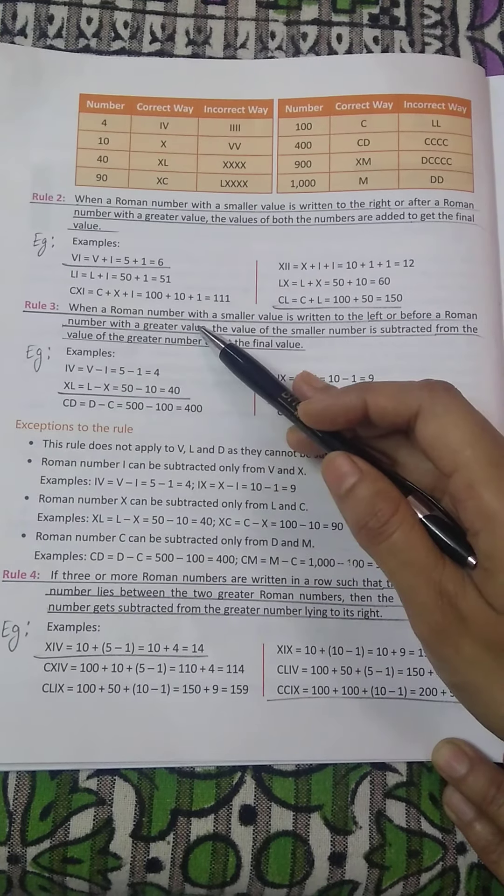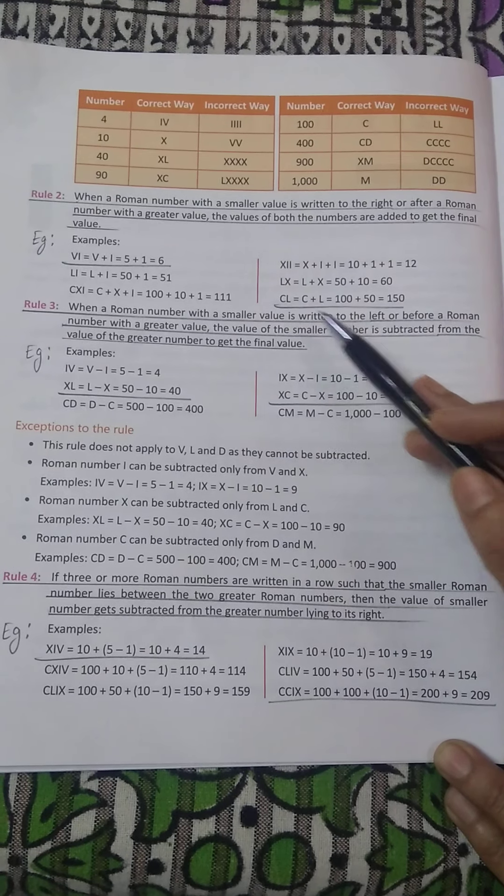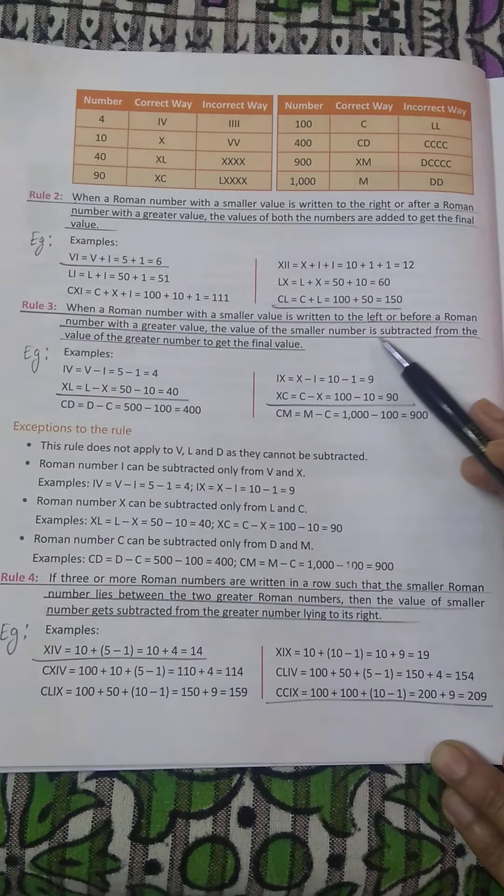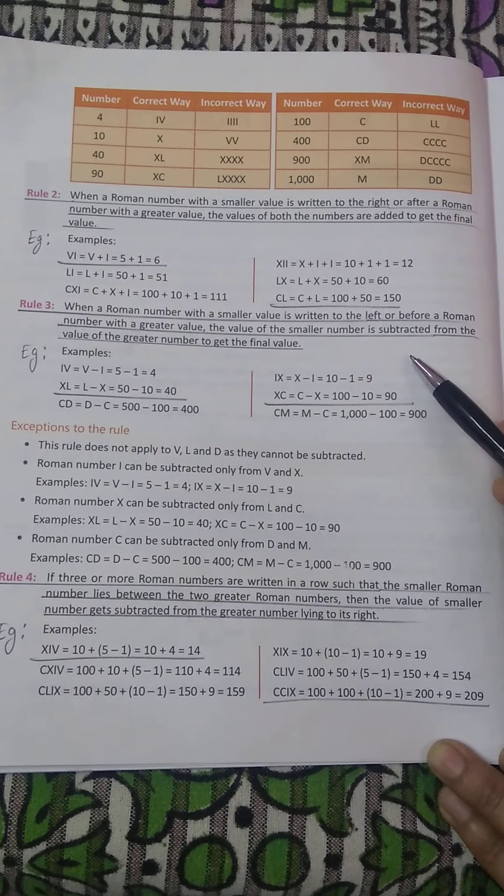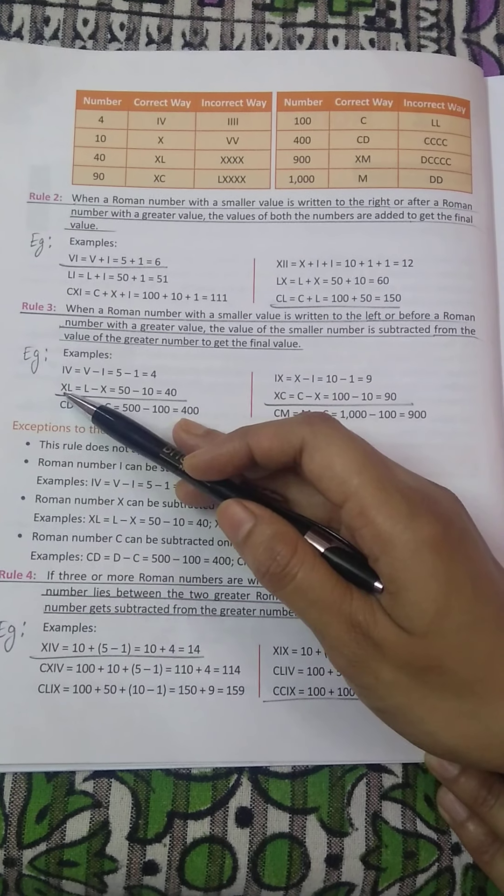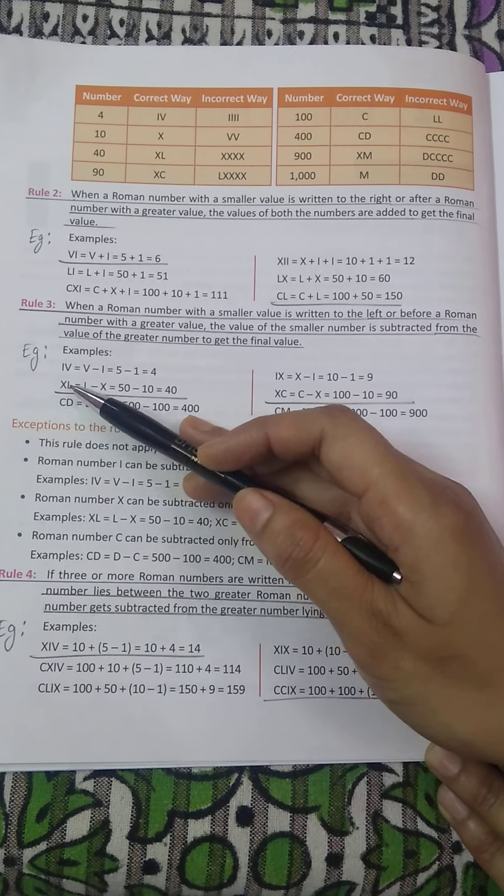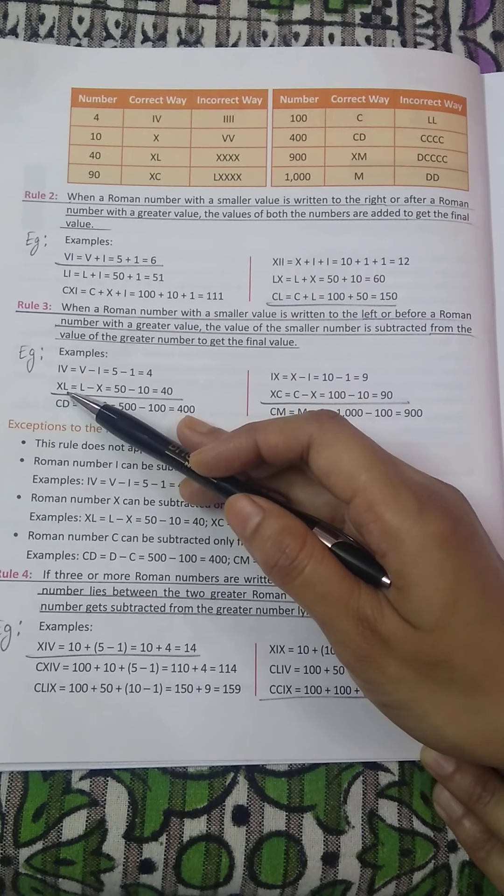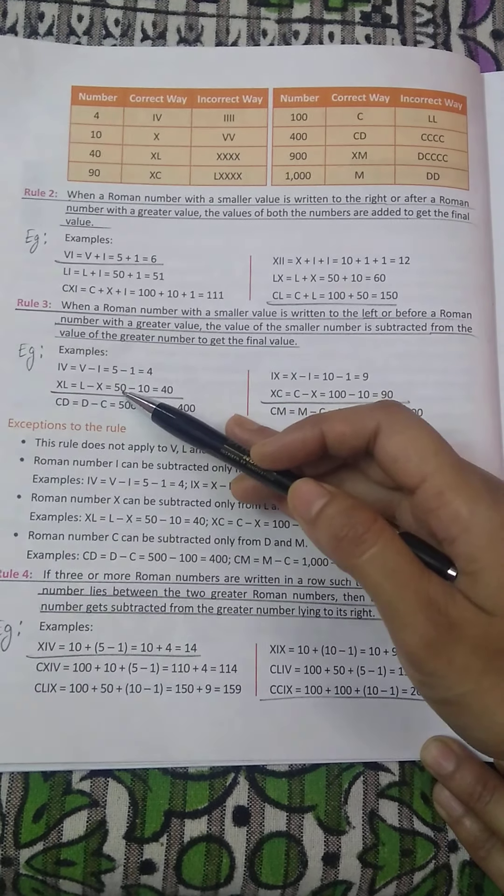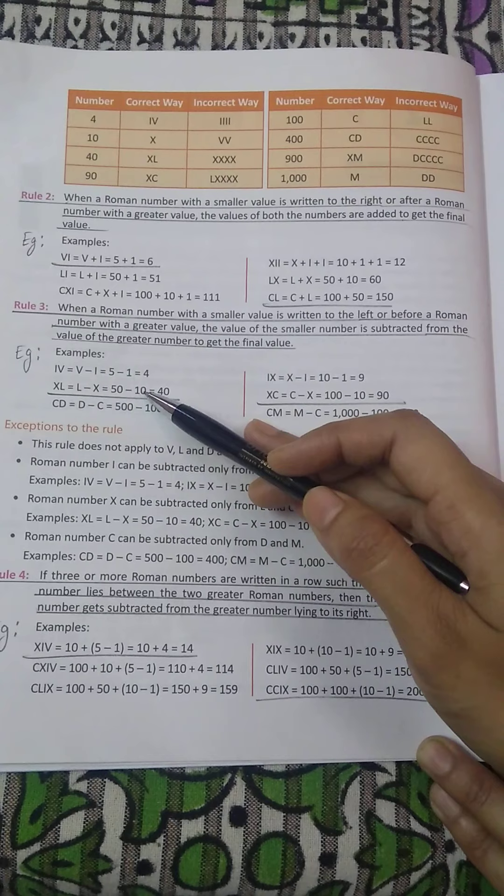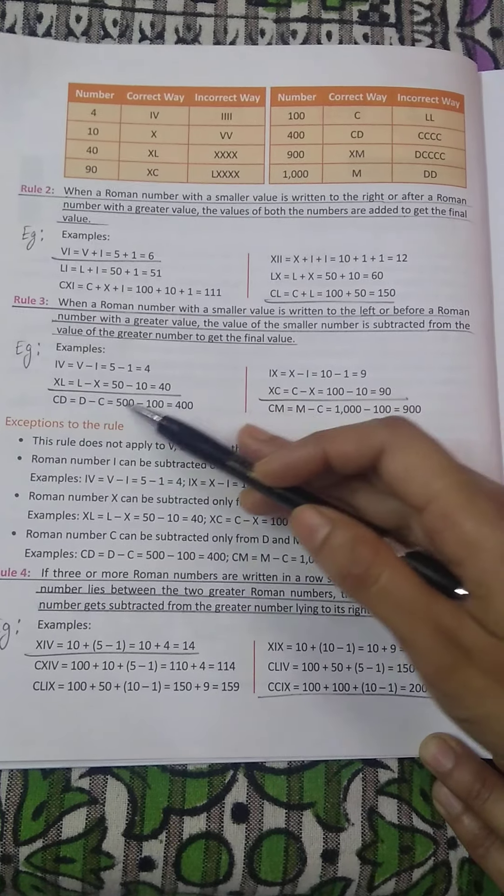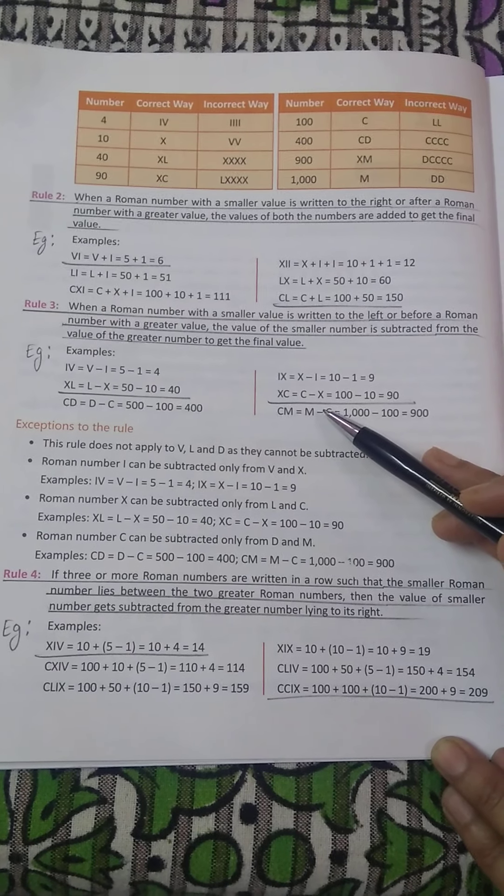After that rule number 3. When a roman number with a smaller value is written to the left or before a roman number with a greater value, the value of the smaller number is subtracted from the value of greater number to get the final value. For example XL, X is 10, L is 50. 10 is smaller and it is written on the left, left hand side of the bigger number. So X will get subtracted from L. What is L? L is 50 and X is 10. We will subtract them and get the value of 40. So XL is 40. So I have underlined two examples. Write it after rule number 3.